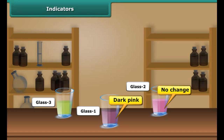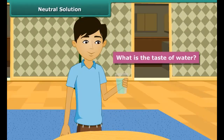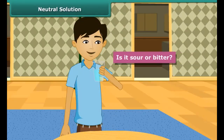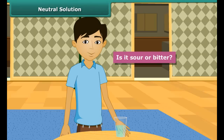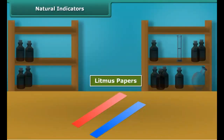There is no color change in glass two because water is neutral in nature. The color in the third glass changes to green. We can conclude that the indicator solution from China rose turns bright pink in the presence of an acid and green in the presence of a base. We can put a drop of this indicator in any food item to know whether it is acidic or basic.